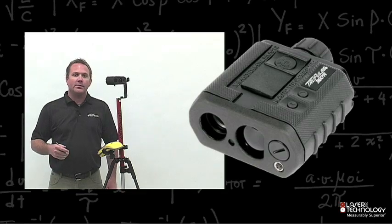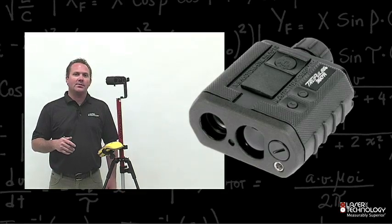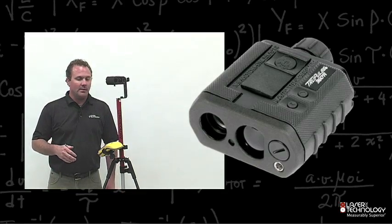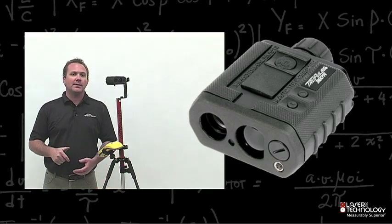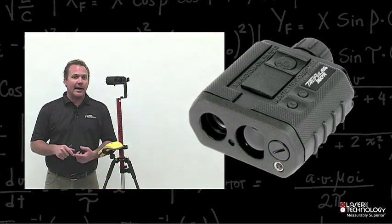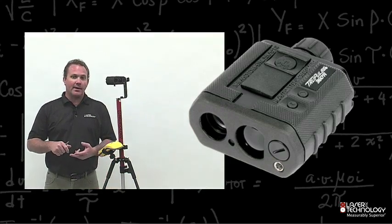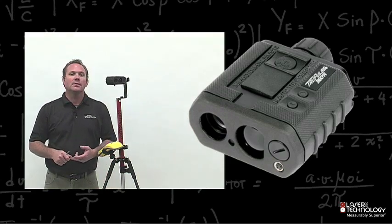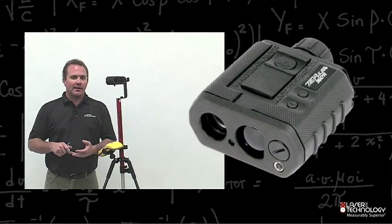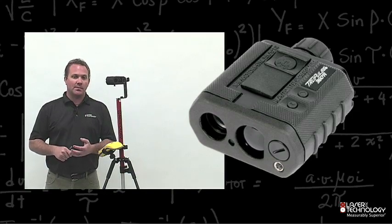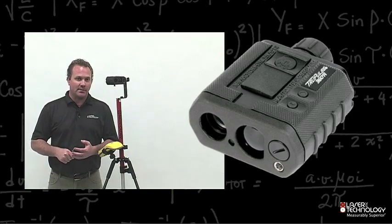In this chapter, what we're going to do is perform some GPS laser offsets within ArcPad. Some of the first things we need to do is add a layer, make that layer editable, activate our GPS, and then perform some laser offsets.